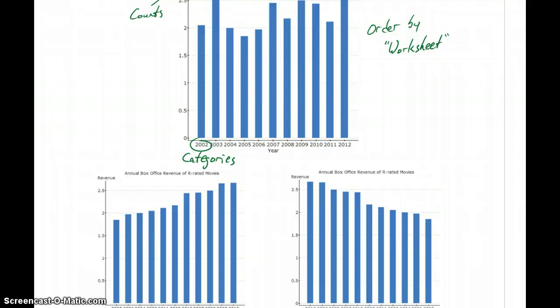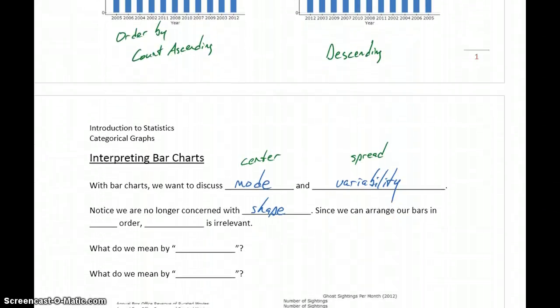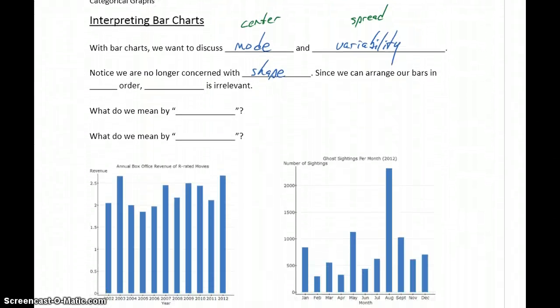Since we can manipulate that graph to any kind of shape that we want, shape is something that becomes irrelevant. So since we can use any shape or any ordering, shape is just something that doesn't have a lot of meaning for bar charts.